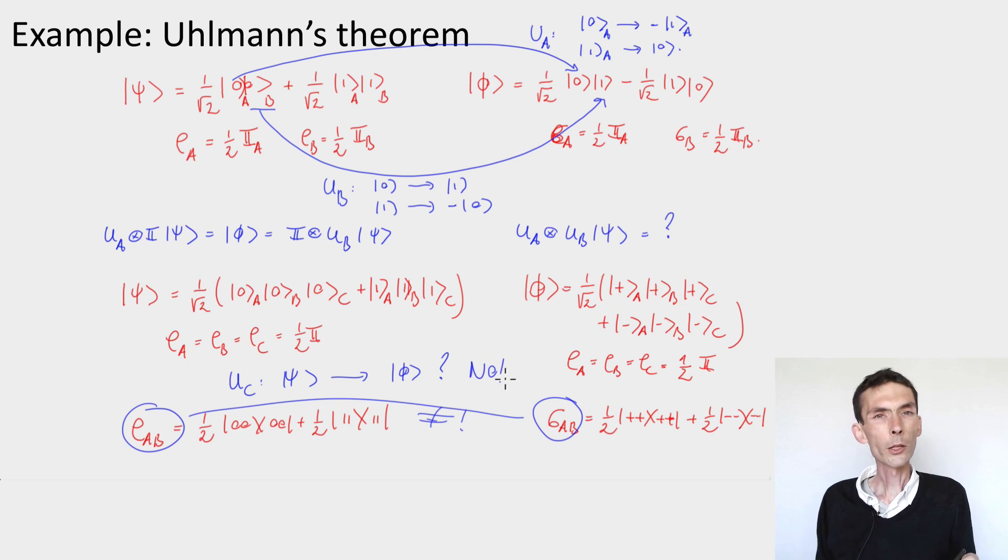So you have to be careful in trying to apply Uhlmann's theorem to states that are more than bipartite, because if you want to see if one state can be mapped to the other by acting on one system, the reduced density on all remaining systems should be the same.